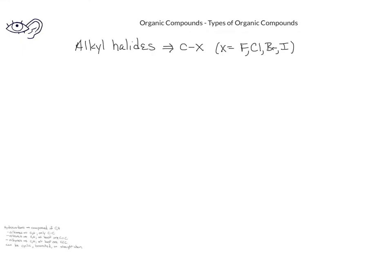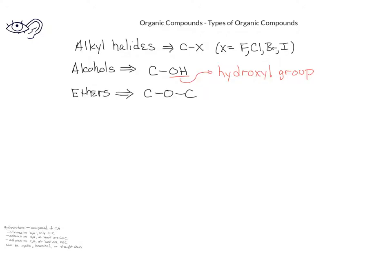Alkyl halides are very much like the hydrocarbons, except that one of the hydrogens is replaced by a halogen atom — either fluorine, chlorine, bromine, or iodine. Another type of organic compound are known as alcohols. Alcohols are identified because they have an OH, or hydroxyl group, replacing one of the hydrogens on a carbon. Another type of organic compound also containing oxygen are known as ethers. Ethers have an oxygen bonded in between two carbon atoms.